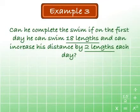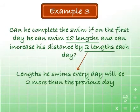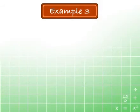We can model this problem with an arithmetic progression. The sentence 'he can increase his distance by two lengths each day' indicates that the length he will swim each day will be two more than the previous day. So we can use the arithmetic nth term model.